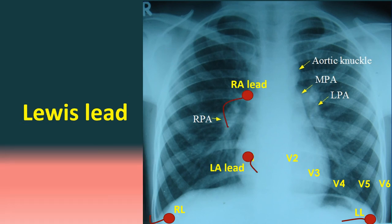The Lewis lead is a modified lead designed to enhance the amplitude of P waves and thereby enable better arrhythmia analysis. It is useful in detecting P waves during a wide QRS tachycardia and helps differentiate between ventricular and supraventricular tachycardia. In the Lewis lead, the right arm electrode is placed in the 2nd right intercostal space close to the sternum, and the left arm electrode is placed in the 4th right intercostal space close to the sternum, i.e., the V1 position.